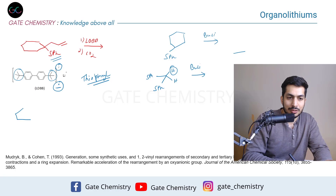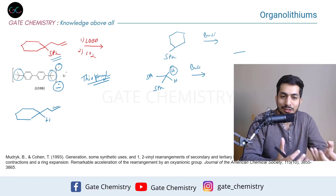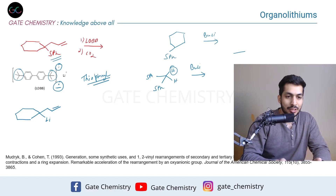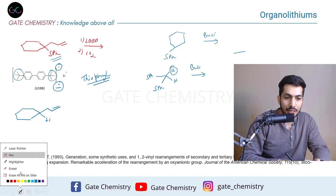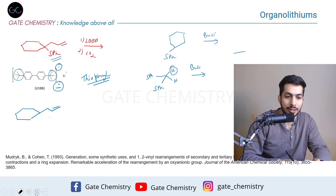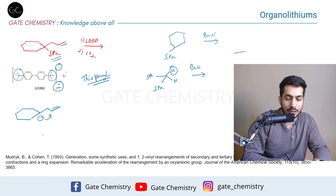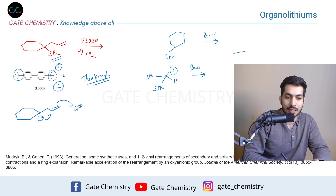Organolithiums often undergo rearrangement reactions, making product prediction difficult. In this case, after lithium-sulfur exchange generates a carbanion at that carbon, a cyclization reaction occurs at low temperature, forming a three-membered ring with a CH₂-Li unit coordinated on the side.